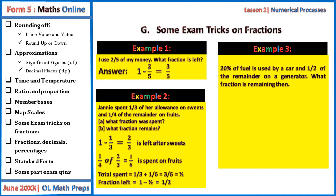So 20% is used by a car and a half of the remainder. So let's first start by looking at 20%. When 20% has been used, 20% is one-fifth. So the fraction that is left after 20% is used is one minus one-fifth, which is four-fifths.